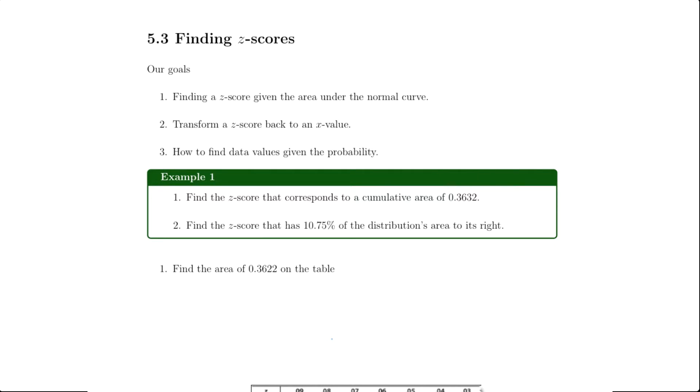Welcome to section 5.3, titled Finding Z-Scores. In this section, we're going to find a z-score given the area or probability from the normal curve, then transform that z-score back into an x-value when we have word problems. To summarize, it's about finding data values given the probability.